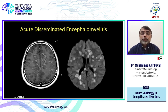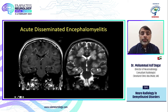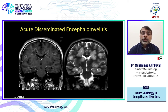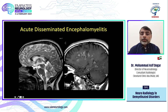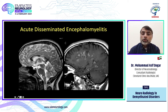Here is a typical ADEM case: almost all lesions are enhancing, most have diffusion restriction, on T2 they are slightly ill-defined, some have complete ring enhancement and some incomplete — but importantly, almost all lesions are enhancing. Multiple lesions are present; sometimes they can involve the corpus callosum. There is a typical lesion in the brainstem, and the spinal cord is also involved.